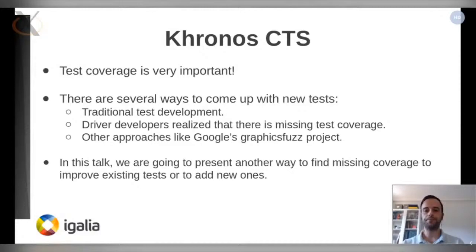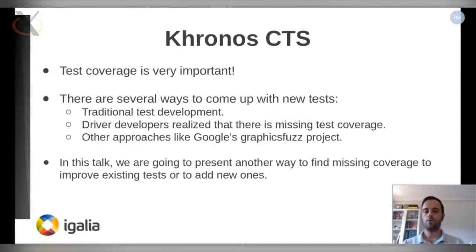There are other approaches, like, for example, fuzz testing that could provide invalid, unexpected, or even random data as inputs to the different API functions, or to shader code, among other things. One example of this work is the Google project called GraphicsFuzz.